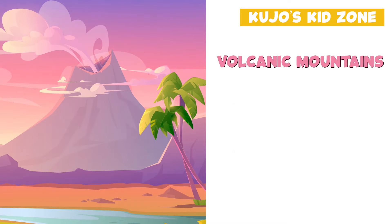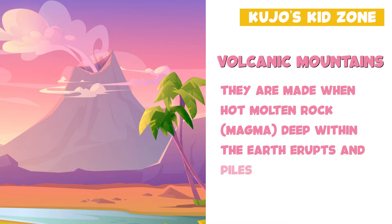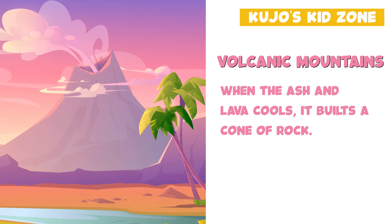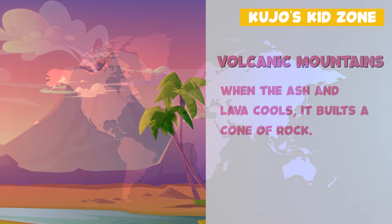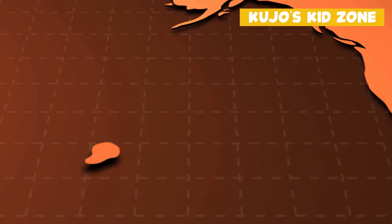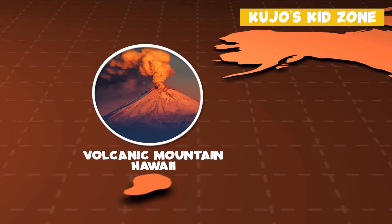Volcanic mountains are made when hot molten rock magma deep within the Earth erupts and piles up on the surface. When the ash and lava cools, it builds a cone of rock. An example of this would be volcanic mountains found in Hawaii.